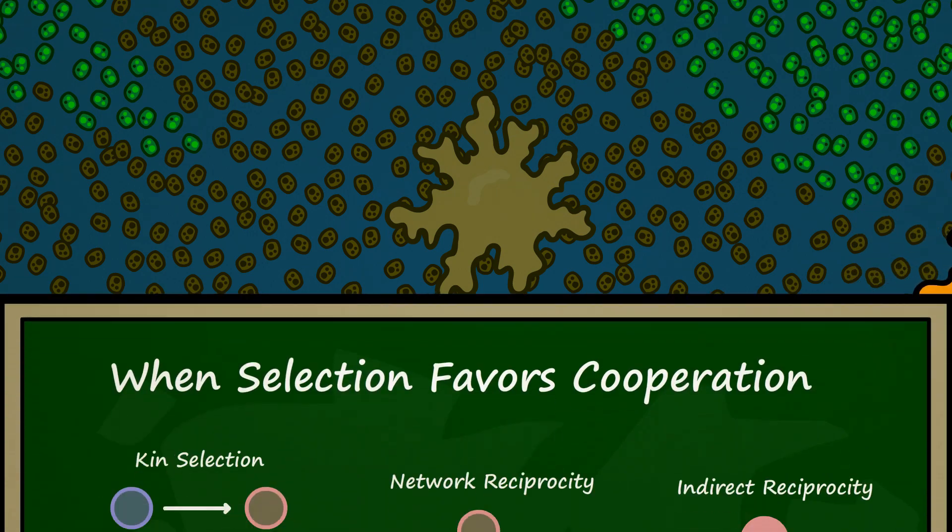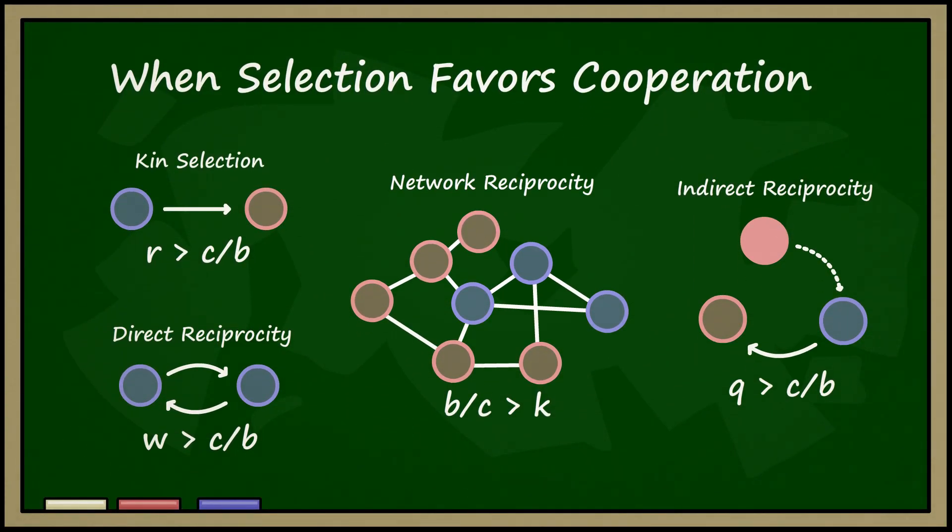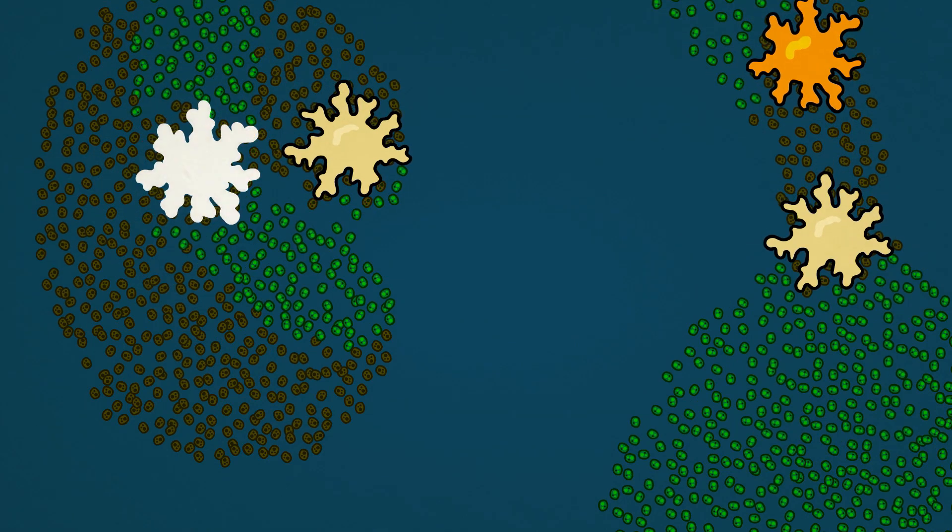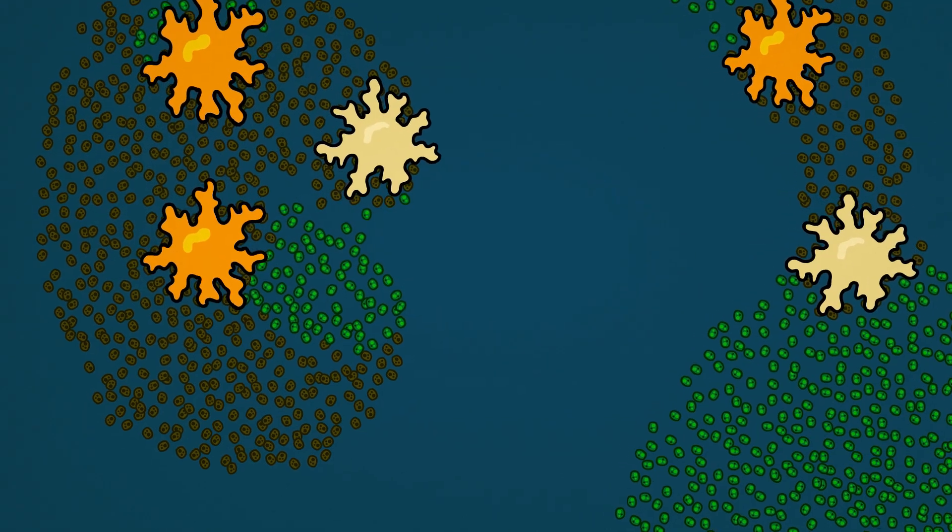By modeling natural selection mathematically, however, scientists have discovered many situations that actually promote the evolution of cooperation. One possible example would be an environment with small patches of slow-growing algae.